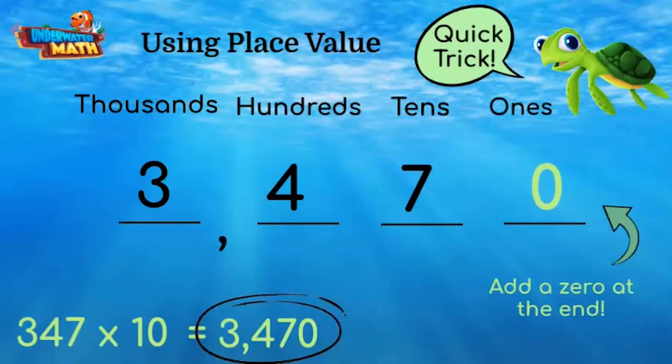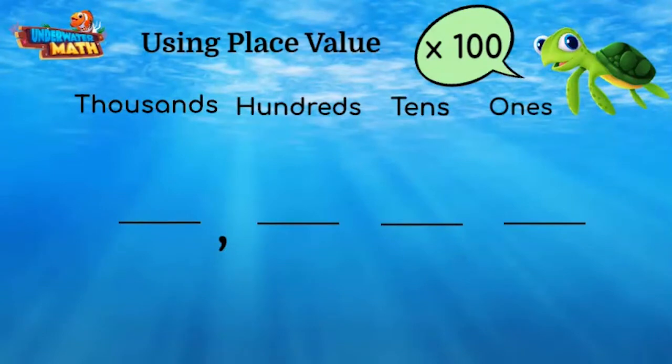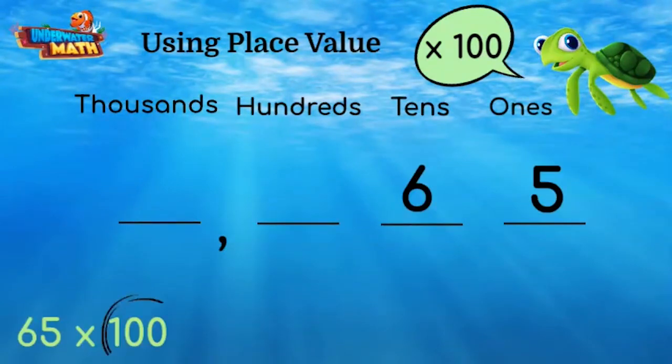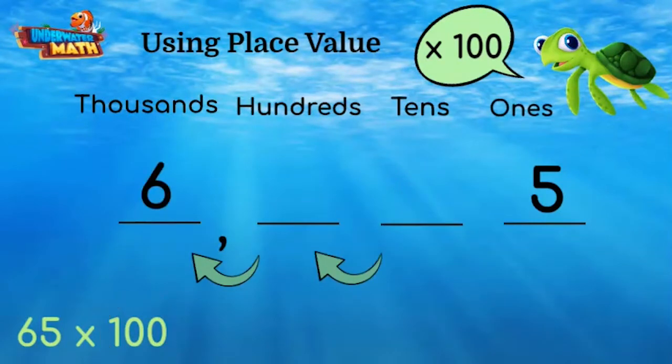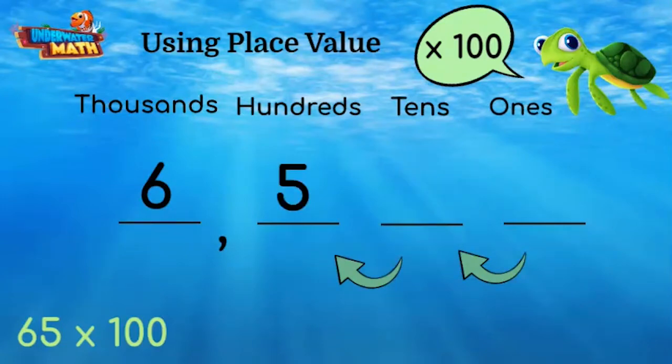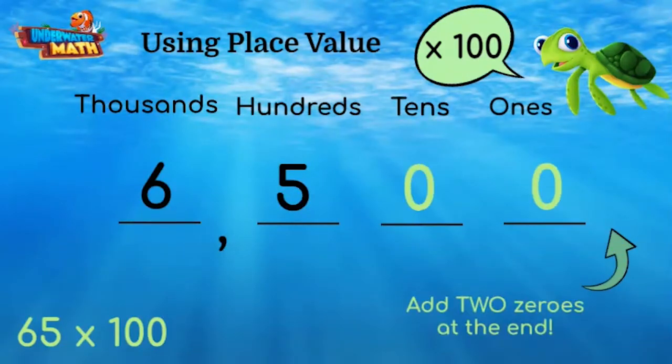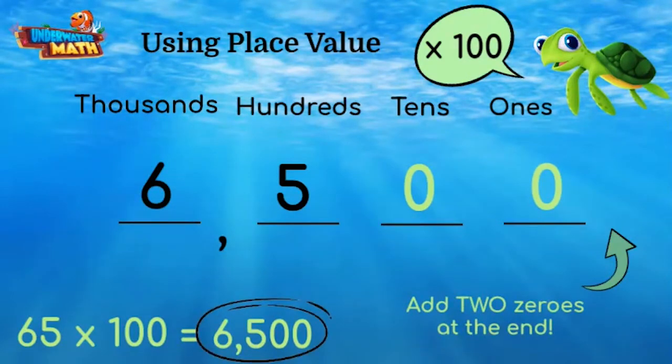Multiplying by 100 is very similar. Let's try 65 times 100. When we multiply any whole number by 100, the digits increase by two place values, so we move each digit to the left twice. Then we add two zeros at the end of our number.